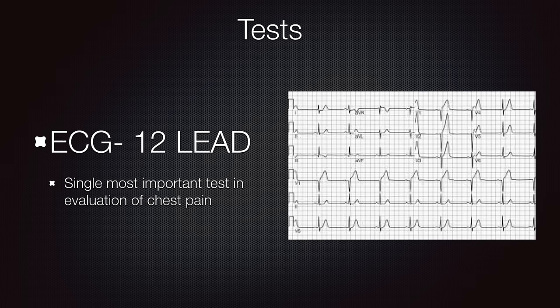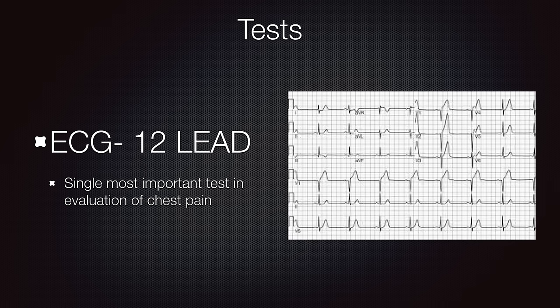A 12-lead EKG is the single most important test in evaluation of chest pain. Approximately 50% of patients who have an acute myocardial infarction actually have EKG changes consistent with ST elevation or Q waves. Many non-cardiac-related conditions also have EKG changes, which further emphasizes the importance of an EKG for all patients being evaluated for significant chest pain. Chest pain with a normal EKG also signifies a very minimal chance that the patient is having an acute MI.